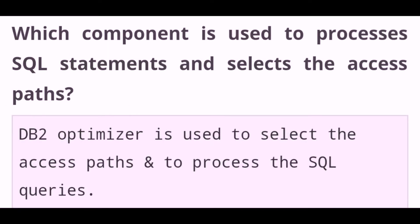Which component is used to process SQL statements and select the access paths? The DB2 optimizer is used to select the access paths and to process SQL queries.